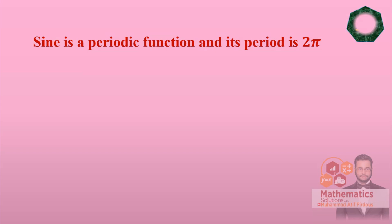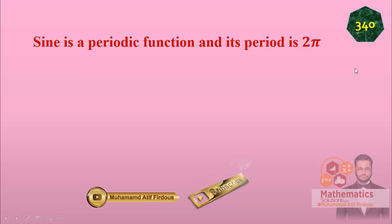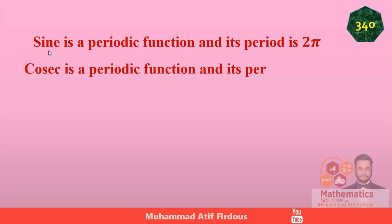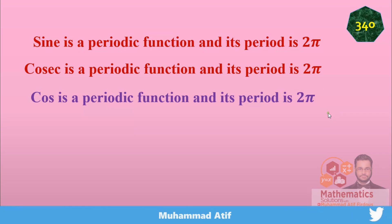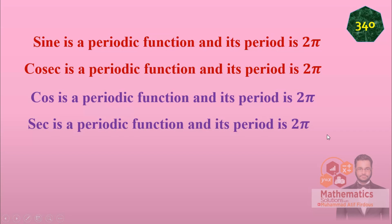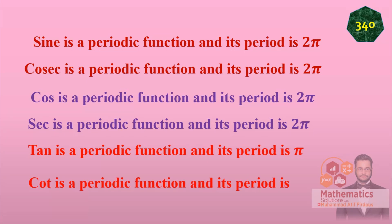One tip: the period of sine and other periodic functions like cosine is 2 pi, meaning after 2 pi it repeats its value. This is a theorem on page 340. The period of sine is 2 pi, similarly cosine's period is also 2 pi. However, tangent, cotangent, and their reciprocals have period pi. So remember: sine, cosine, secant, and cosecant have period 2 pi, while tangent and cotangent have period pi.